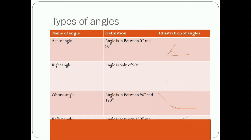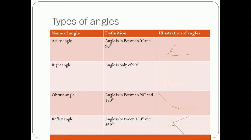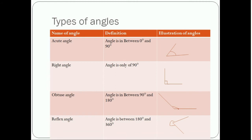The fourth type of angle is reflex angle. A reflex angle is between 180 degrees and 360 degrees. You can see the internal part is lesser but its external part is more than 180 degrees, so this is called a reflex angle.